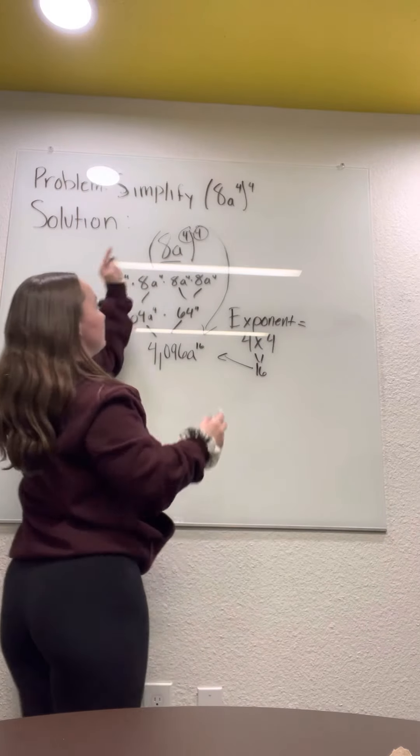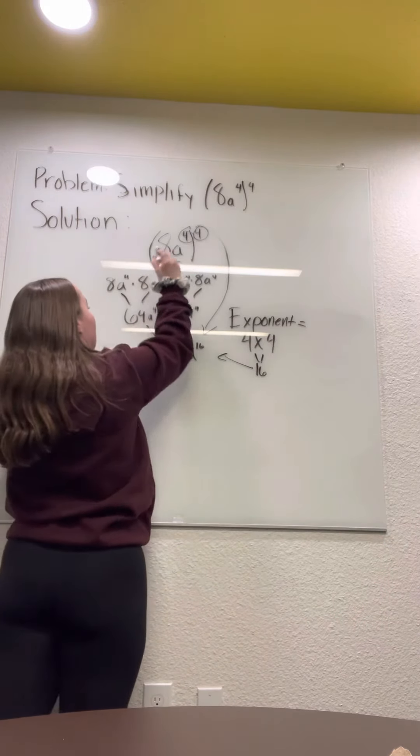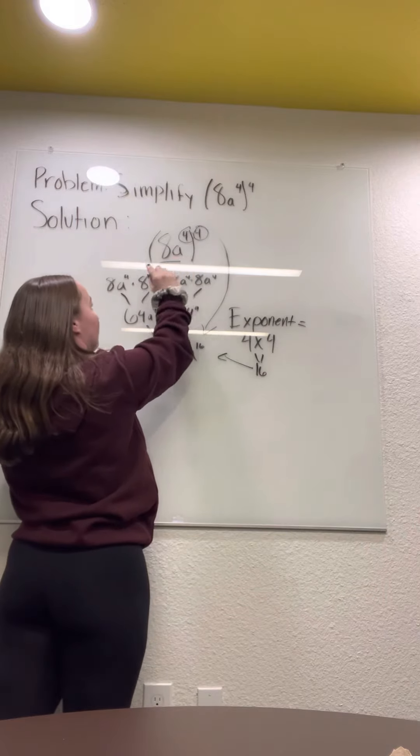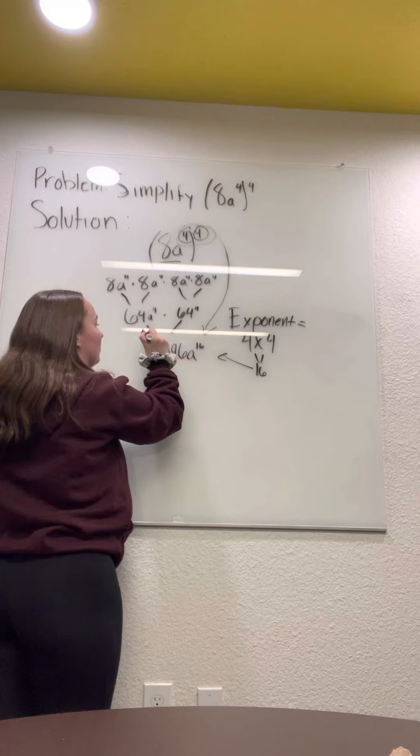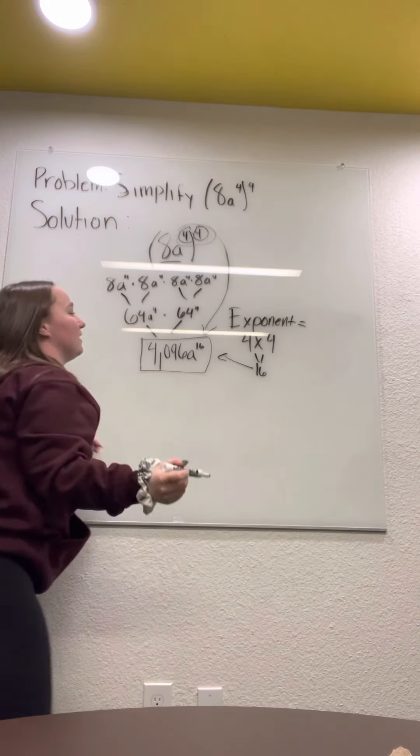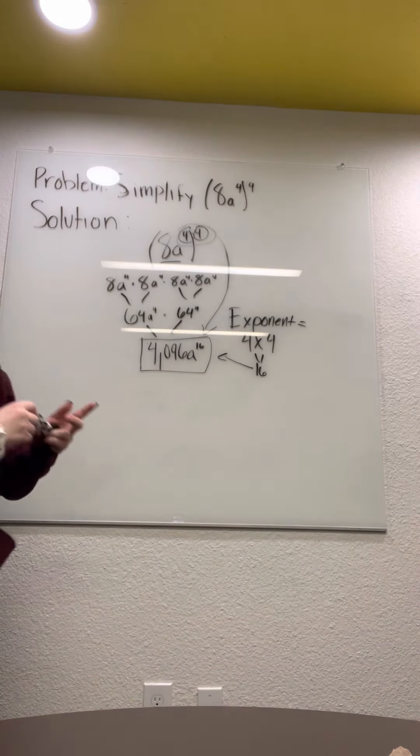So you would take 8a times that by 4, and then also have these two timesing those by 4, which will end up equaling all to 4,096a to the 16th power.